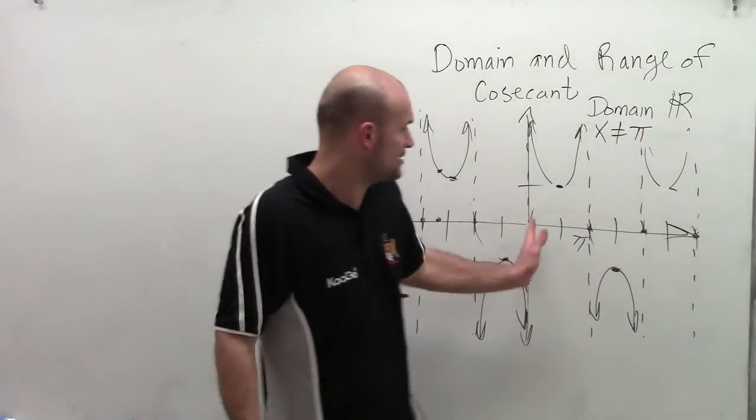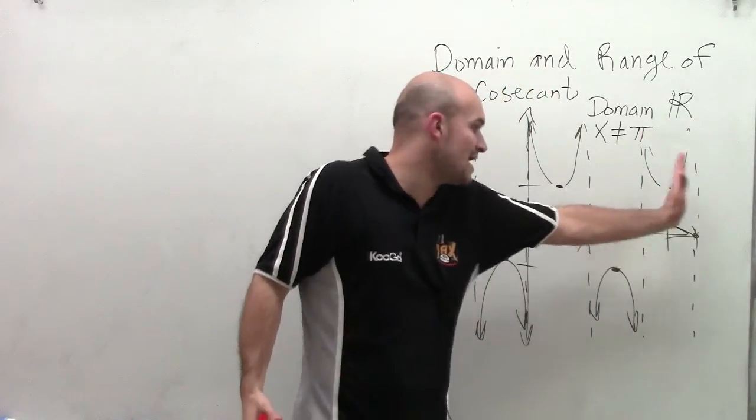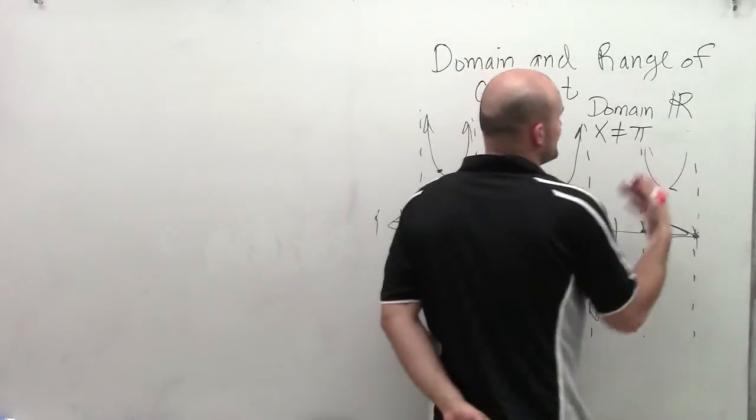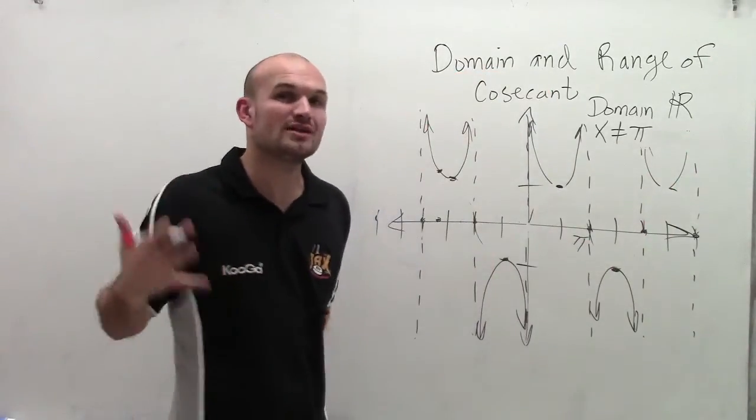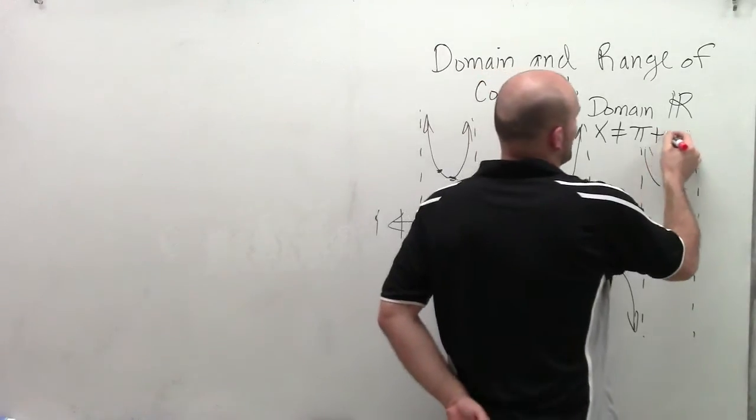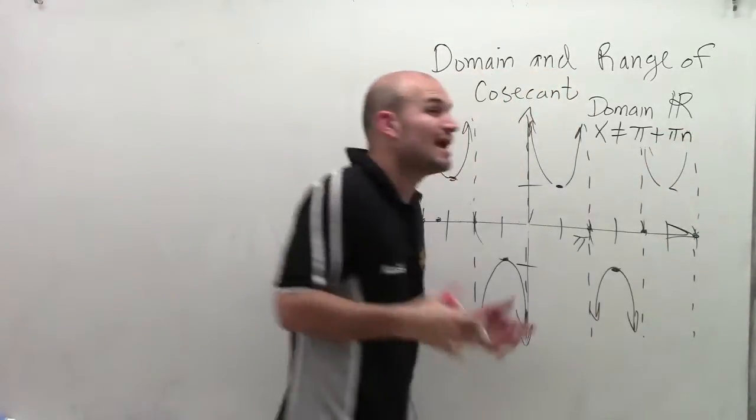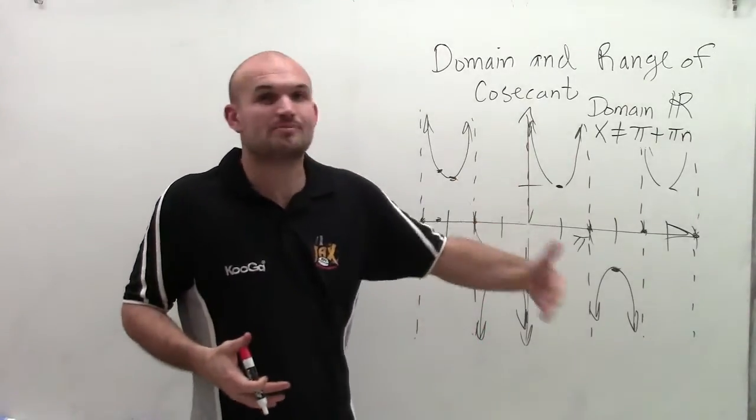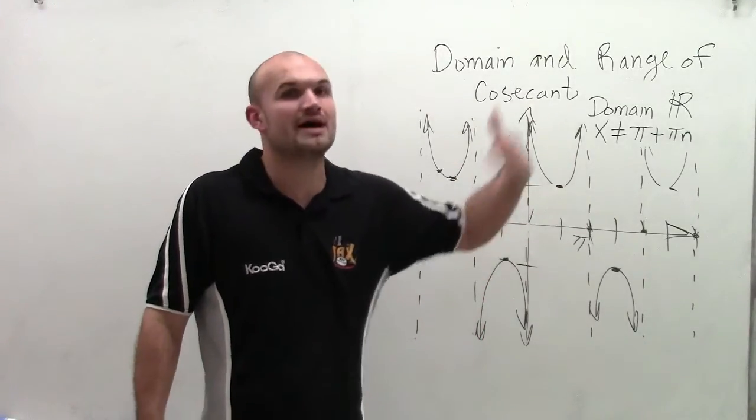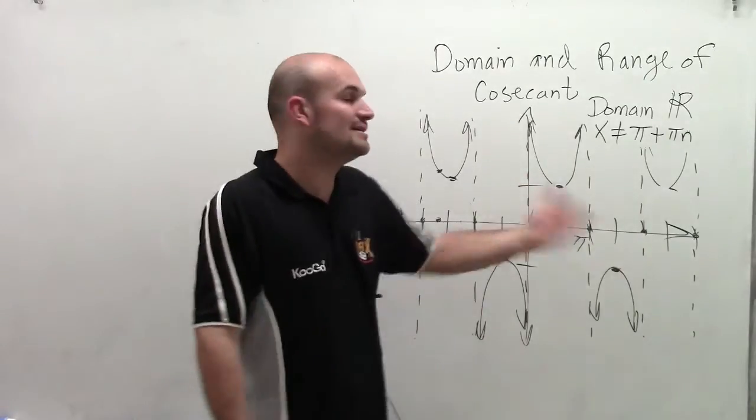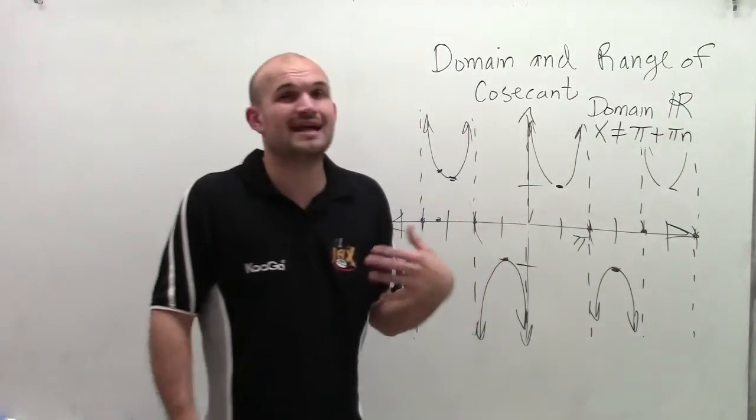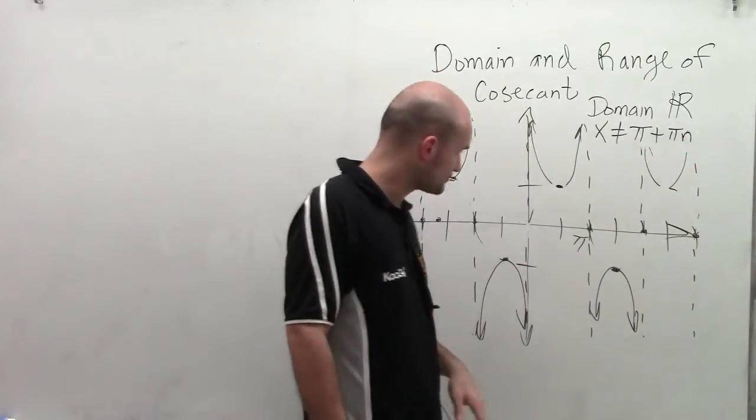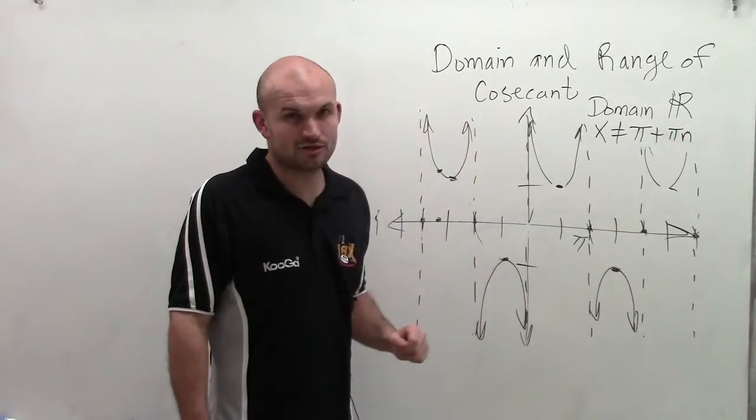So therefore, you can say x cannot equal pi. But pi is not the only asymptote, right? You have an asymptote at pi, at 2 pi, at 3 pi, at negative pi, at negative 2 pi. So to be able to write all of the asymptotes, I'm going to say plus pi n, where n is going to be our variable number because we can just keep on repeating n: pi, 2 pi, 3 pi, 4 pi, 5 pi, negative pi, negative 2 pi. So n can be any real number that's going to be a multiple of our pi.